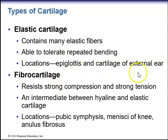Fibrocartilage resists strong compression and strong tension. It's an intermediate between hyaline and elastic cartilage. Fibrocartilage is found in the pubic symphysis — the cartilage connecting the two hip bones (os coxae) anteriorly — as well as the menisci of the knee and the annulus fibrosus in the intervertebral discs.